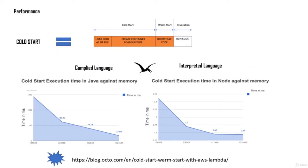Cold start is basically the loading of your code as a zip file, then the creation of a container, and then loading the runtime for your application. These combined form the cold start. A compiled language takes more time to compile, whereas an interpreted language has no compilation step, resulting in a lesser cold start. There is a diagram showing the difference between interpreted and compiled language cold start execution time.